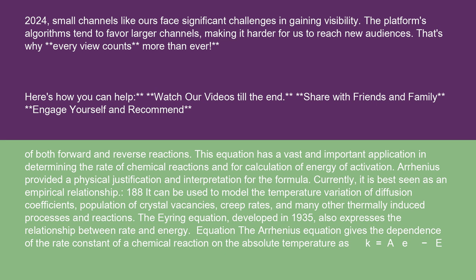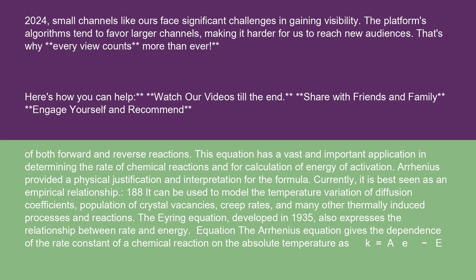The Arrhenius equation gives the dependence of the rate constant of a chemical reaction on the absolute temperature as K equals Ae^(-Ea/RT), where K is the rate constant, frequency of collisions resulting in a reaction, T is the absolute temperature, A is the pre-exponential factor or Arrhenius factor or frequency factor. Arrhenius originally considered A to be a temperature-independent constant for each chemical reaction. However, more recent treatments include some temperature dependence. Ea is the molar activation energy for the reaction. R is the universal gas constant.